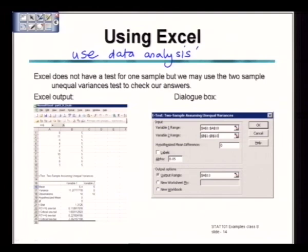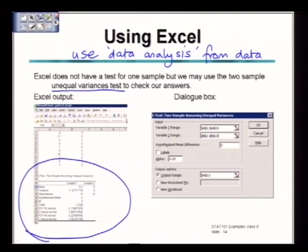Use data analysis from the data menu and we use an unequal variances test to check our answers. Now we can use Excel to get the mean and the sample mean and standard deviation and we can do this test by the usual means. But we can also do it by using the Excel function and getting Excel to do the whole thing for us.